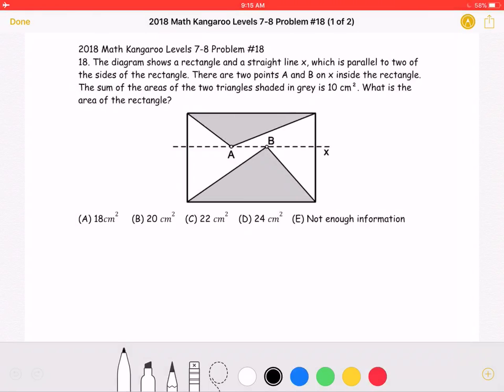A, 18 centimeters squared. B, 20 centimeters squared. C, 22 centimeters squared. D, 24 centimeters squared. Or E, not enough information.